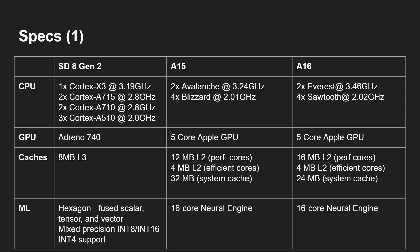The A15 and A16 are hexa-core. You've got two high-performance cores — the Avalanche in the A15 and the Everest in the A16 — and then four power-efficiency cores: Blizzard in the A15 and Sawtooth in the A16.